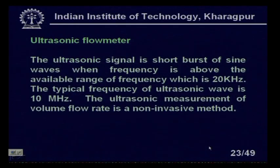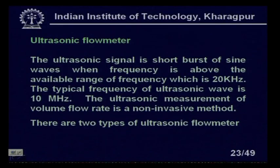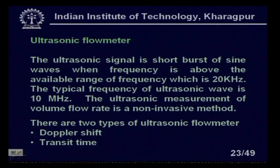The next non-invasive type flow meter we will discuss is the ultrasonic flow meter. The ultrasonic signal is a short burst of sine waves at a frequency above 20 kHz — the non-audible range — typically around 10 MHz, but ranging from 0.5 to 10 MHz. The ultrasonic measurement of volume flow rate is a non-invasive method. There are two types: Doppler shift flow meters and transit time measurement flow meters.